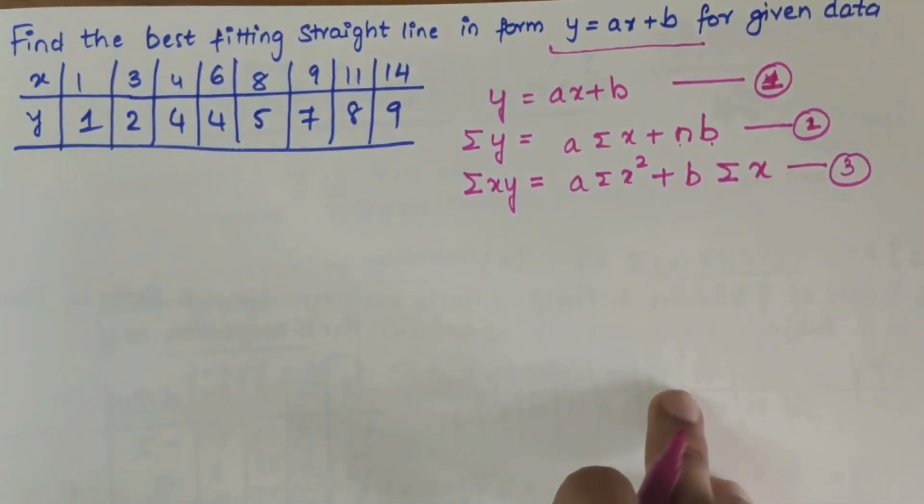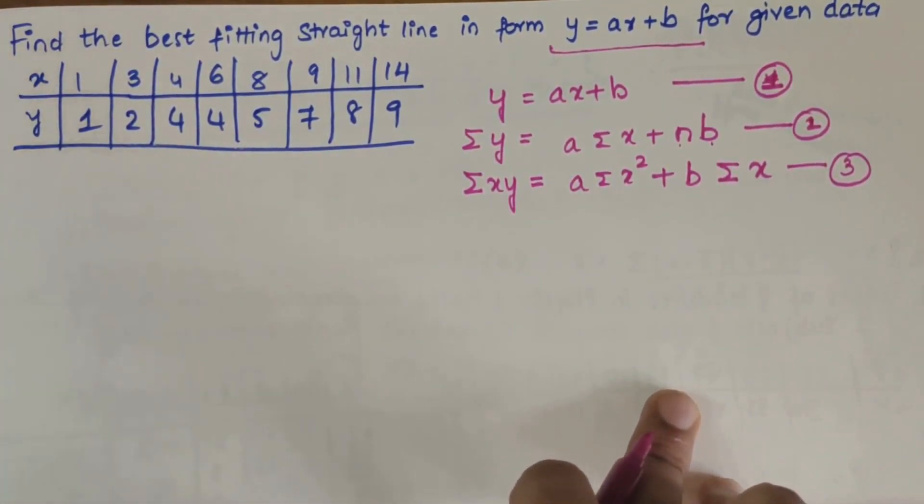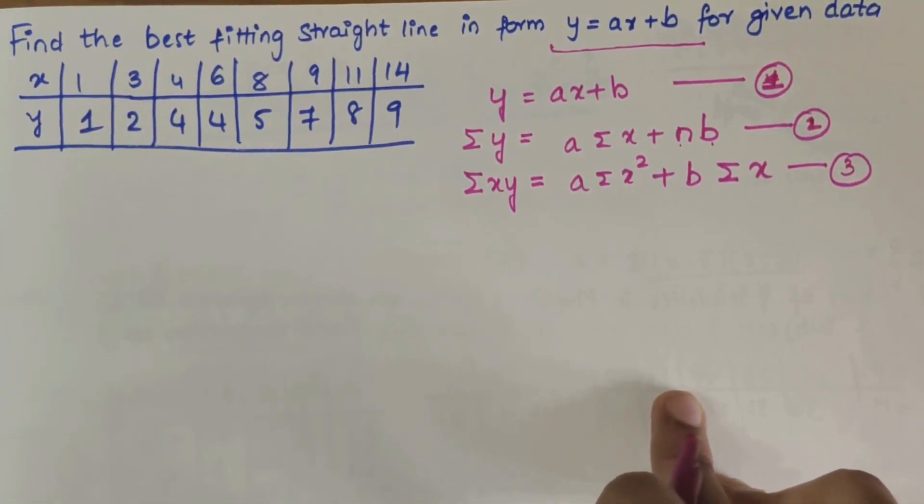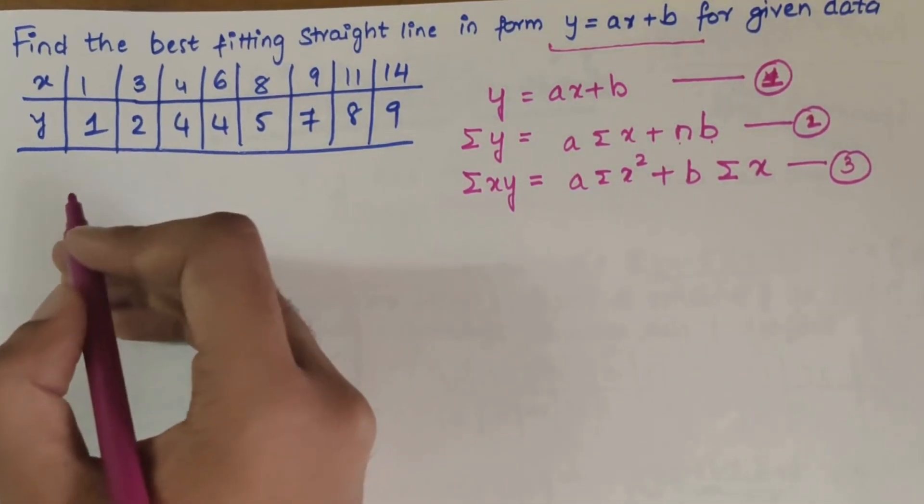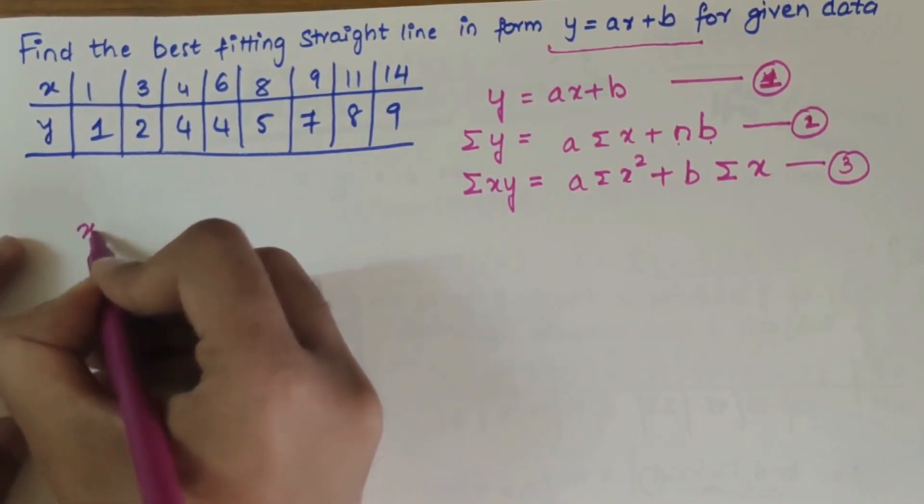So we have obtained two equations now, that is 2 and 3. Based on the values of 2 and 3 we will be computing the best fitting straight line. So now let's compute the table.